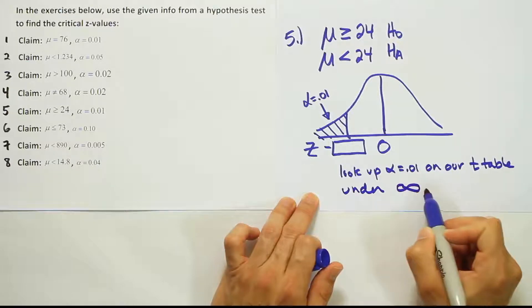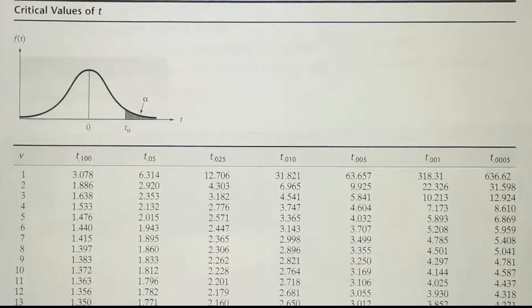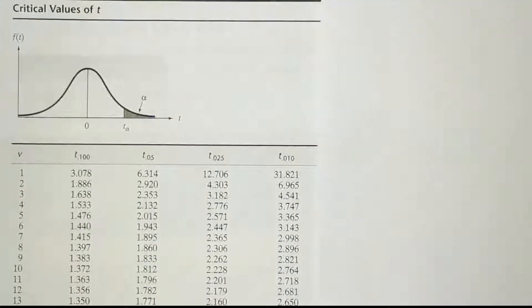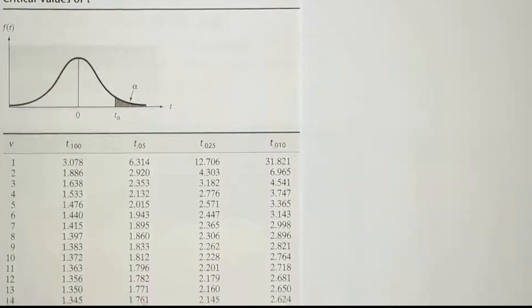Under infinity. So we're going to look under the infinity row to find it, and that will give us our critical z value. So let's go there now and look that up. So we're looking at 0.01 down at infinity. Okay, so here there's the 0.01 column and we're going to go straight down until we reach to the very bottom.